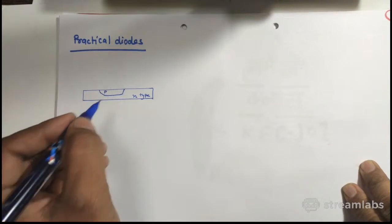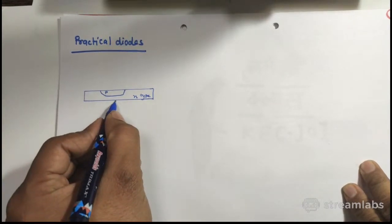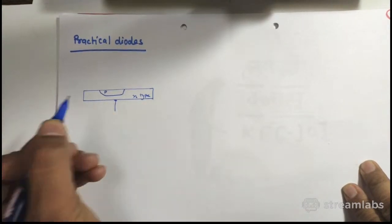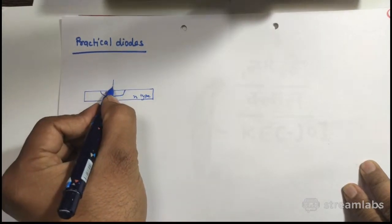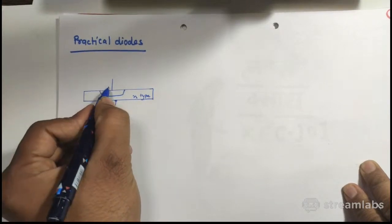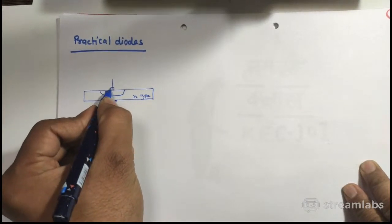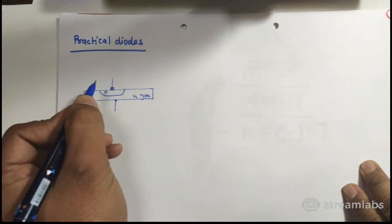And so in this way, p-n junction is formed and one terminal, this connecting wire, is connected over here for making one terminal and other connecting wire is connected over here with the help of aluminum connection or copper connection.